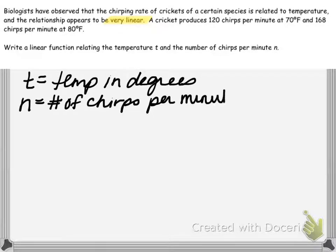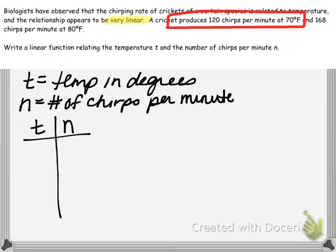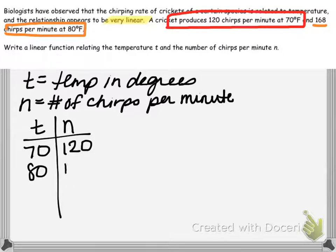I'm going to start with a variable key and organize the information in a table. T is the temperature in degrees Fahrenheit. N is the number of chirps per minute. Since there wasn't an equation given to us, we're trying to write the equation ourselves. One strategy is to organize the information in a table. When the temperature is 70, we have 120 chirps per minute. We also have 168 chirps per minute at 80 degrees Fahrenheit. Essentially, this problem has given us two different coordinates: 70 comma 120 and 80 comma 168.